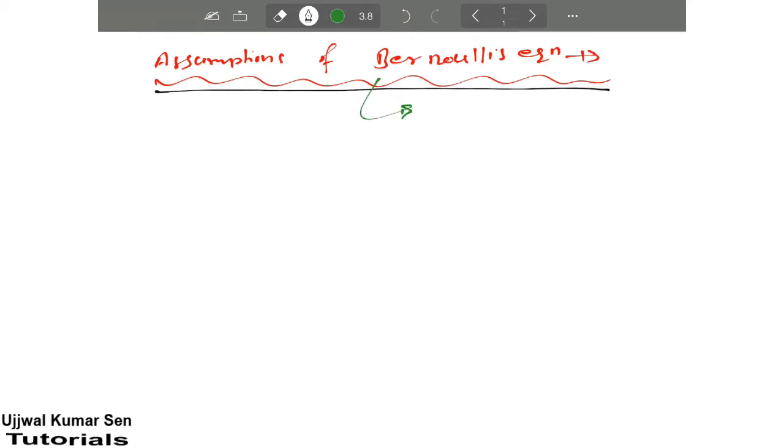You know the equation we got from Bernoulli's derivation. Hopefully you have watched the tutorial. So here we go: P upon ρg plus v square upon 2g plus h is equal to constant. We got this equation. We use this equation for solving various numerical problems.